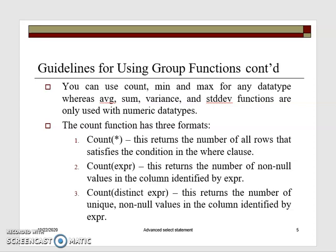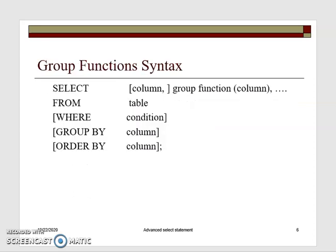The count function has three formats. Count all returns the number of all rows that satisfy the conditions in your where clause — it will count all rows. Count with an expression returns the number of non-null values — only rows that have values are returned. Count distinct expression will only return values for non-null values that are actually unique or distinct.